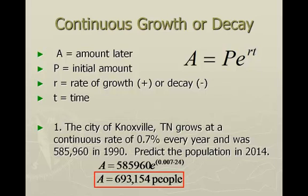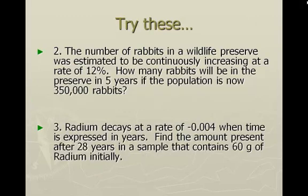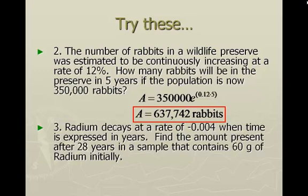It actually came out to a decimal, and I rounded to a whole person because we don't want to keep a decimal amount of a person. For number two, the number of rabbits in a wildlife preserve is estimated to be continuously increasing at a rate of 12% — see that 'continuously increasing,' so we use this formula. How many rabbits are in the preserve in five years if the population is now 350,000 rabbits? We started with 350,000 for P, E stays as E, and in the exponent, R is 0.12 (the decimal version of 12%) times T, which is 5 years. Type this into your calculator and we get a population of 637,742 rabbits, rounded to a whole number.